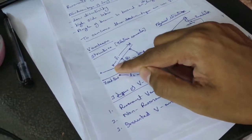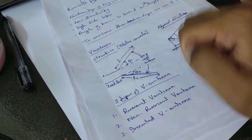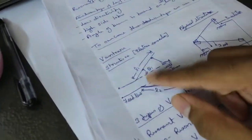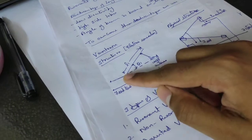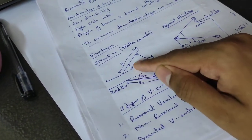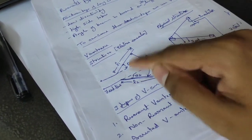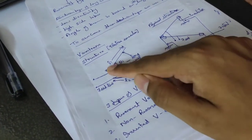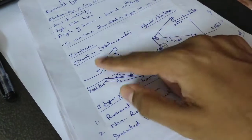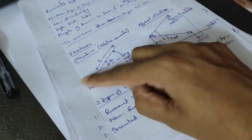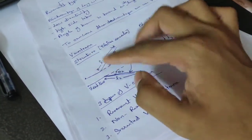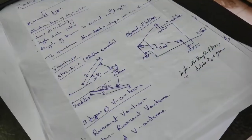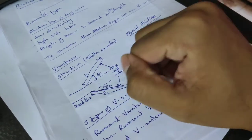The V antenna consists of two long wires of length L1 and L2, inclined at angles theta 1 and theta 2 from the base. These are two long wire antennas connected to the feed line, constructed like this, and this goes to the feed line.